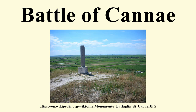the Senate did not renew his dictatorial powers, and command was given to consuls Gnaeus Servilius Geminus and Marcus Atilius Regulus. In 216 BC, when elections resumed, Gaius Terentius Varro and Lucius Emilius Paulus were elected as consuls, placed in command of a newly raised army of unprecedented size, and directed to engage Hannibal. Polybius wrote: the Senate determined to bring eight legions into the field, which had never been done at Rome before, each legion consisting of 5,000 men besides allies.